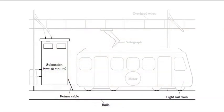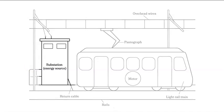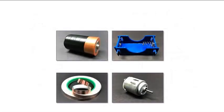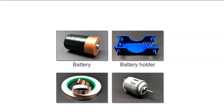Let's use this diagram of a light rail system to learn even more. This is a substation. Substations are found near the rails along a train route and provide electrical energy to the light rail system. Look at these materials: a battery, a battery holder, a roll of copper foil tape, and a motor.